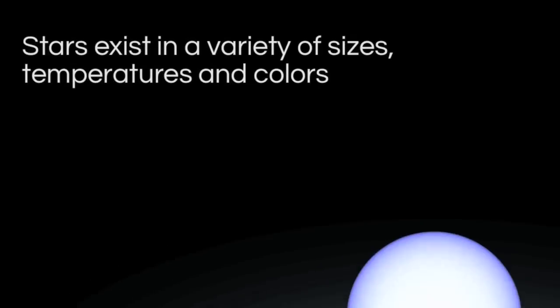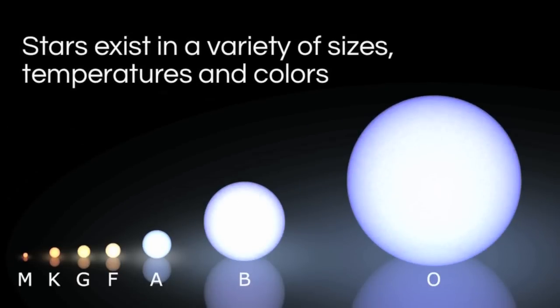As we continue our discussion of stars, keep in mind that they exist in a variety of sizes, temperatures, and colors. This diagram shows the major classes of stars, ranging from small red stars to massive blue stars. The sun is classified as a G or G2 star, making it average in temperature and size.